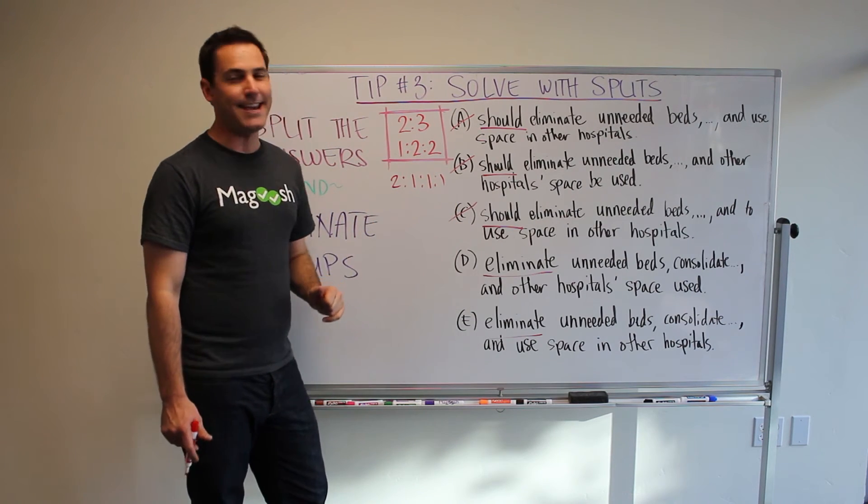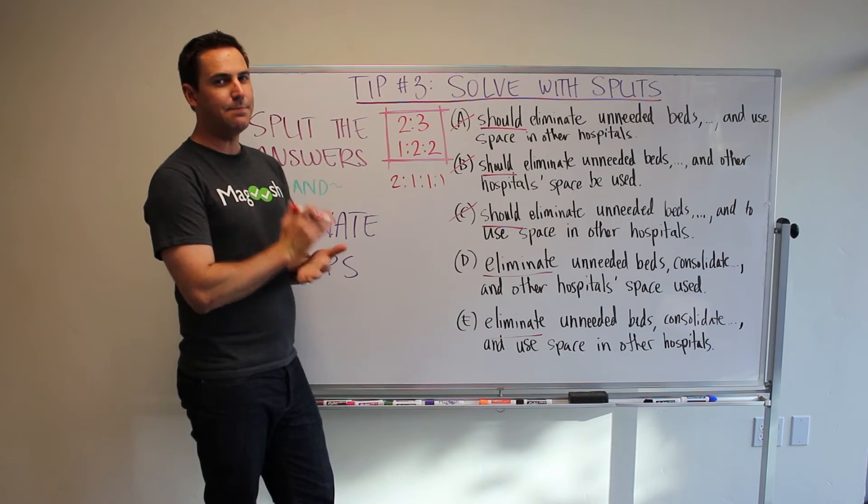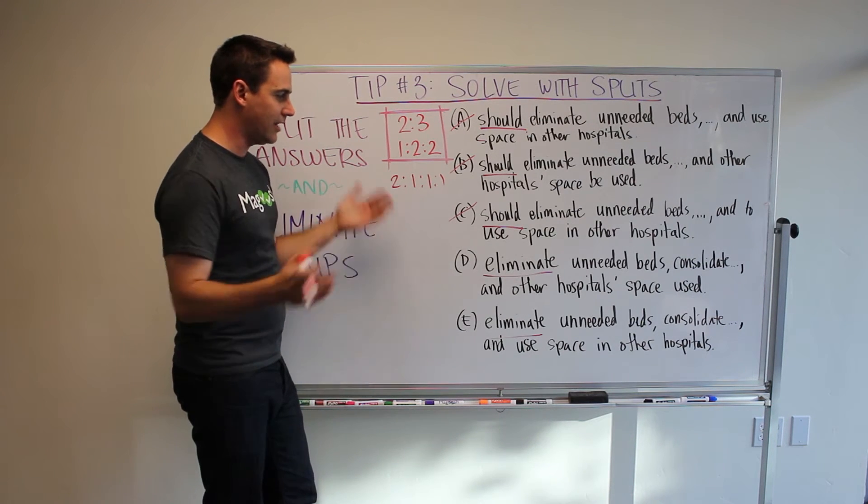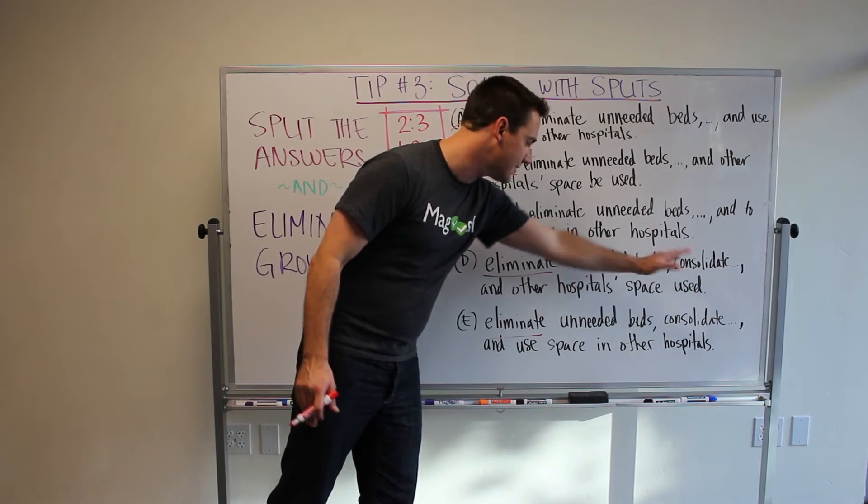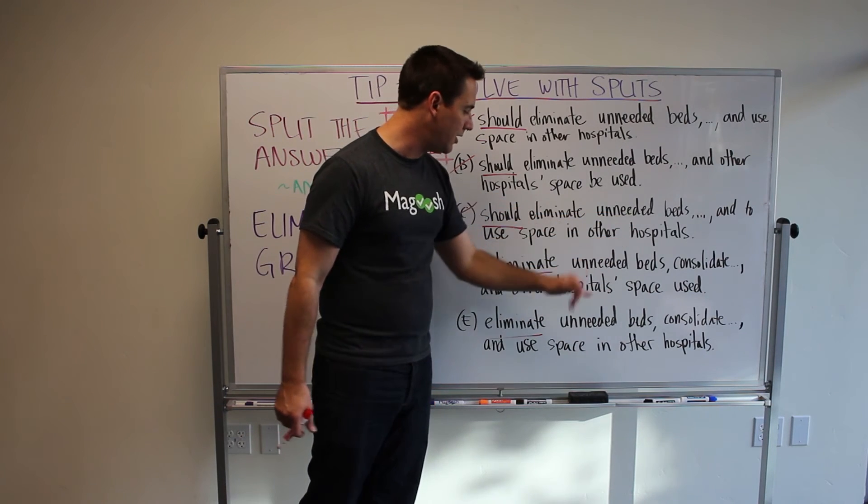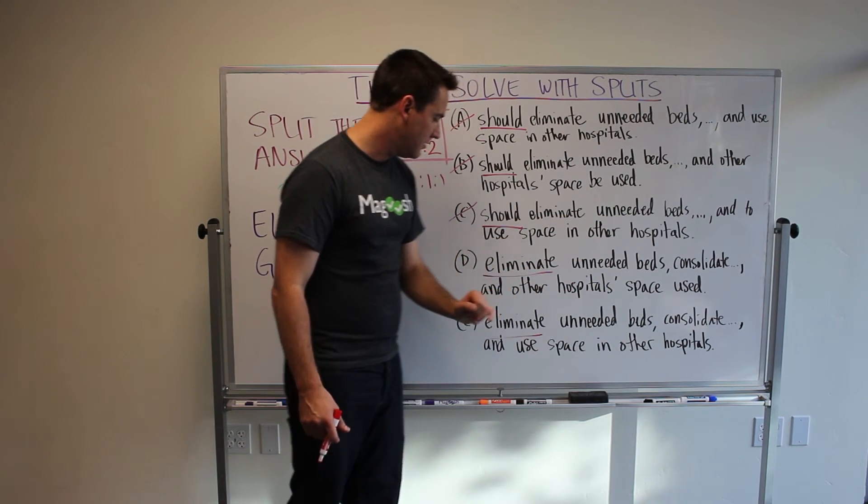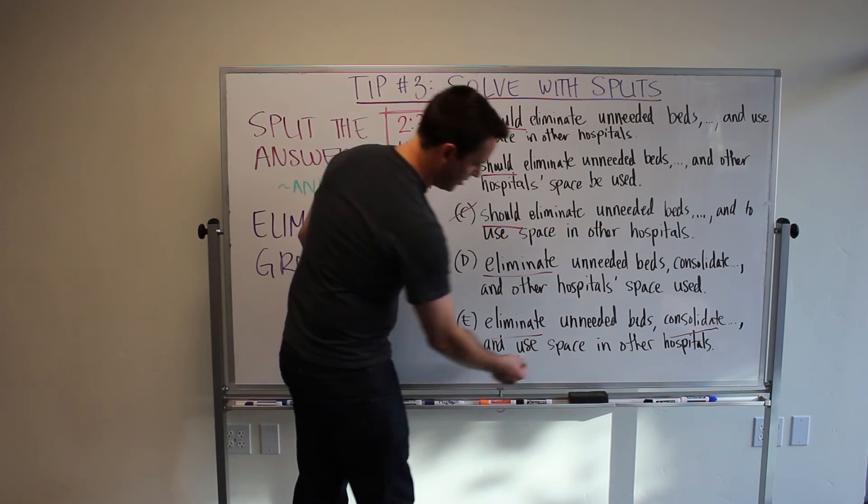Now, I have D and E. Just based on my knowledge of keeping things in parallel, in lists, I can choose a correct answer. Here, I have eliminate, comma, consolidate, and other hospitals. So, it's verb, verb, noun. Now, here is eliminate, consolidate, use.